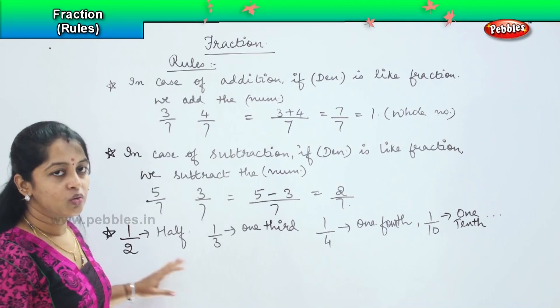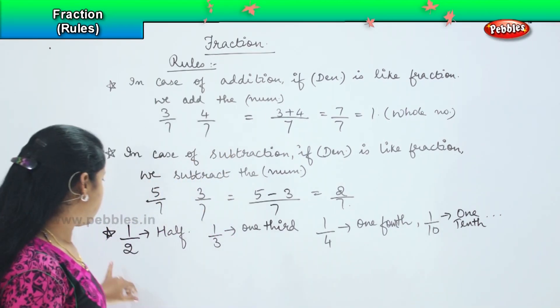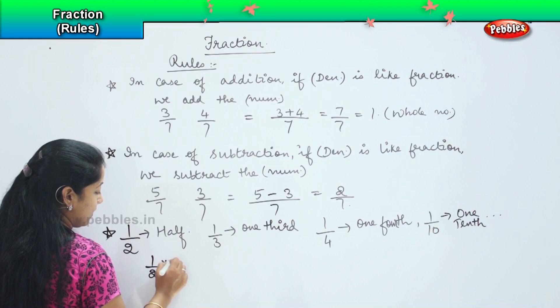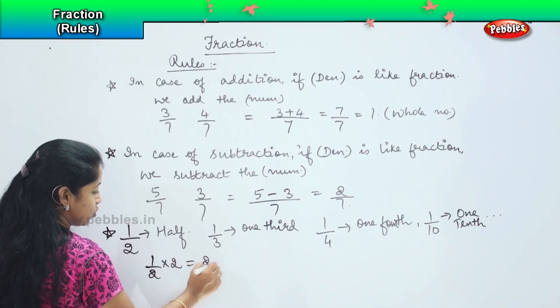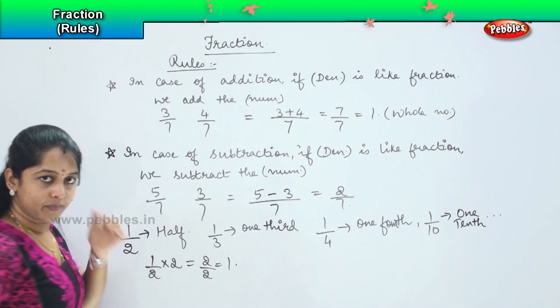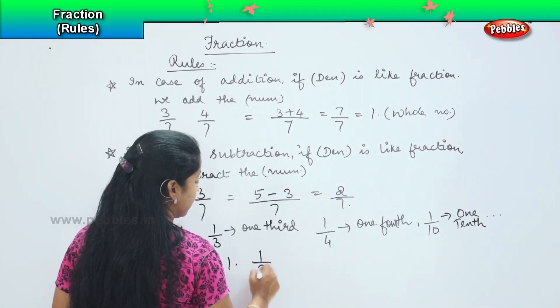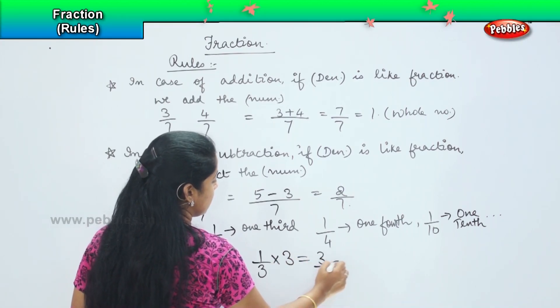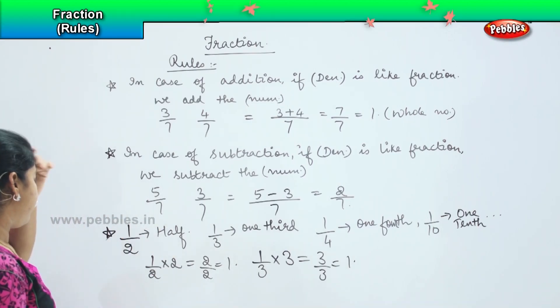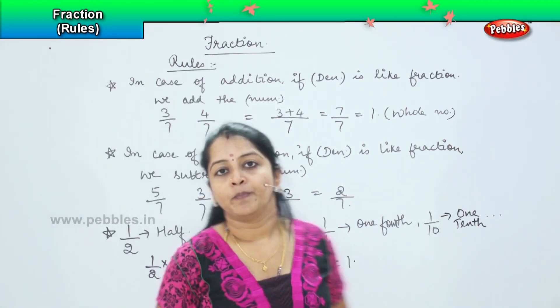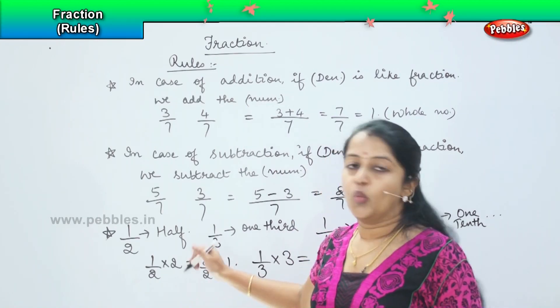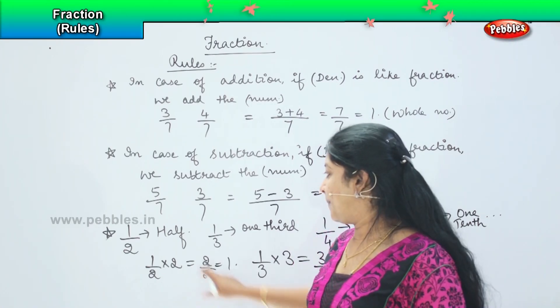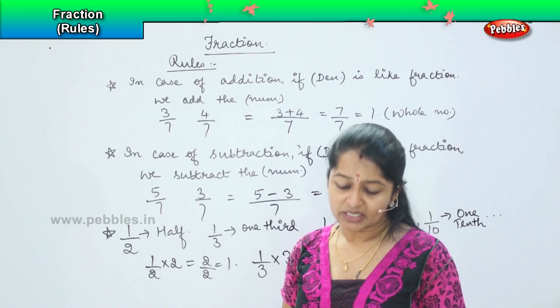And if we want to make it as a whole number, we need to multiply this thing with the given denominator. For example, 1 by 2, if I multiply by 2, it becomes 2 by 2, which is a whole number. Similarly, if I want to multiply 1 by 3, I need to multiply it with 3 itself, which becomes 3 by 3 or the whole number. So if I want to make my fraction as a whole number, I need to multiply it with the same denominator in order to make it as a whole number. And this will happen only if it is in these cases. Clear?